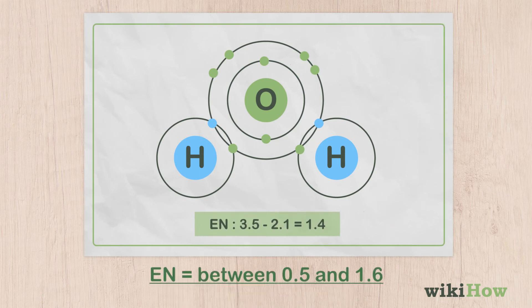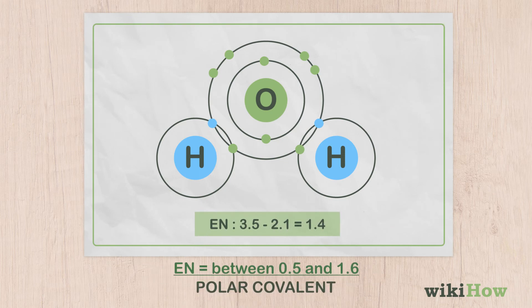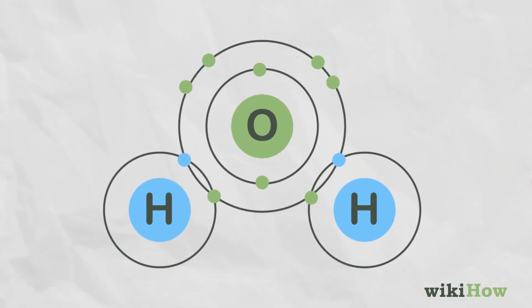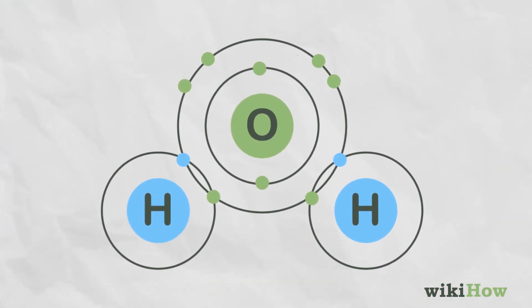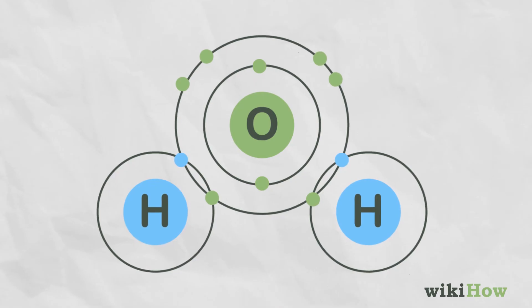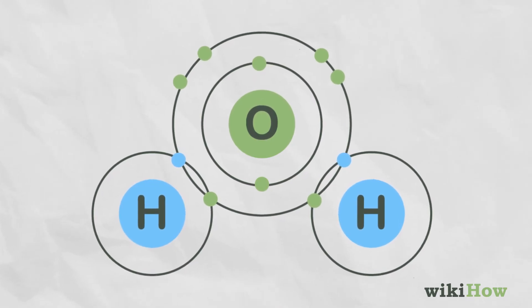If the difference is between 0.5 and 1.6, the bond is polar covalent. These bonds are imbalanced and make the resulting molecule more reactive than one with a nonpolar covalent bond.